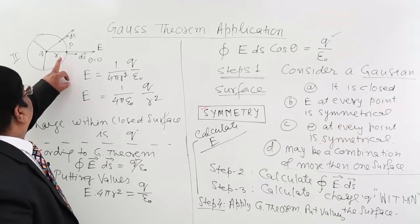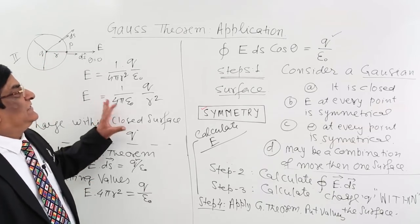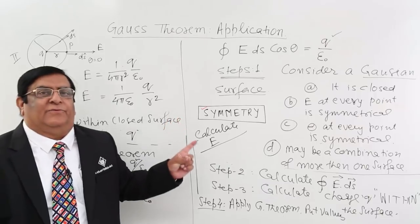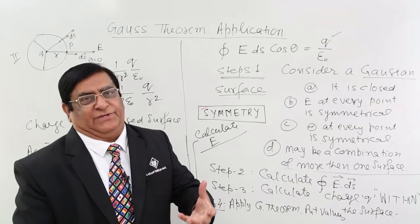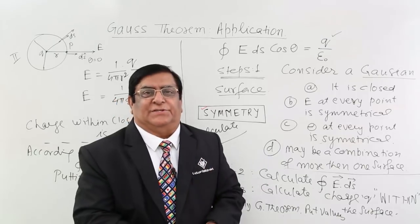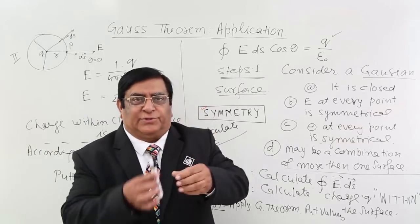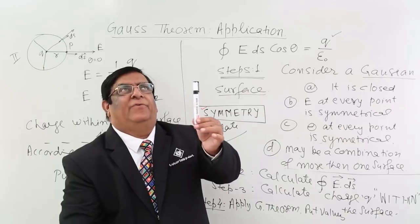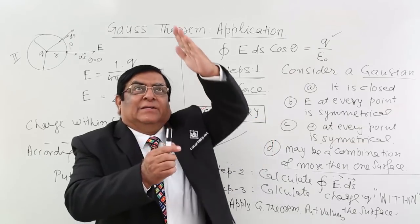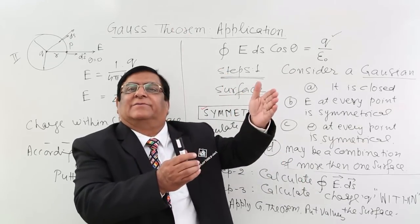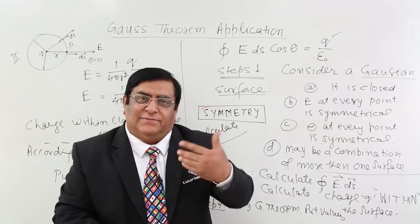This is how we find the electric field at any point at a distance R from the charge — this is the application of Gauss theorem using 4 steps. These 4 steps we will now apply to more complicated situations. Next, we will take the case where charge is distributed on a very long straight line (infinitely long), and find how much is the electric field at a distance R from it — that will be in the next lecture.